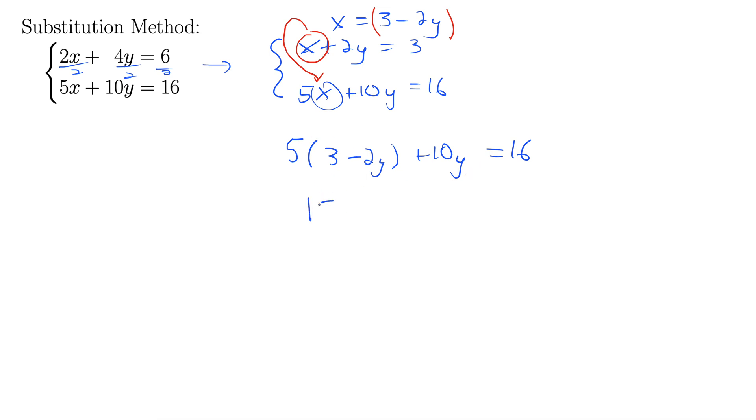Let's distribute the 5 through. That gives 15 minus 10y plus 10y equals 16. Interesting. The negative 10y and plus 10y cancel out. And we get 15 equals 16, which is blatantly false.